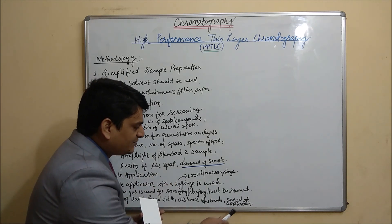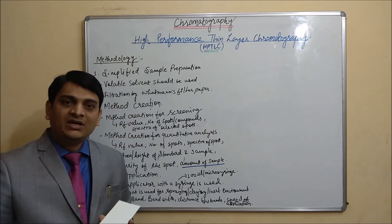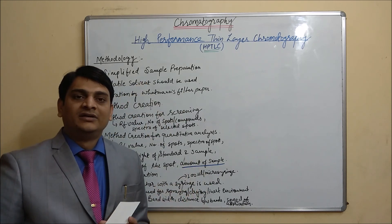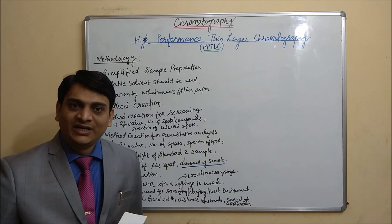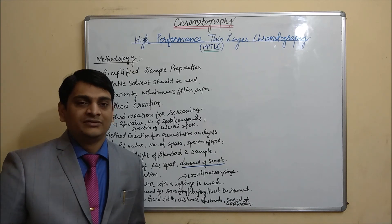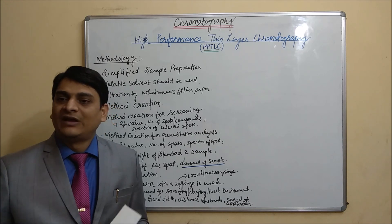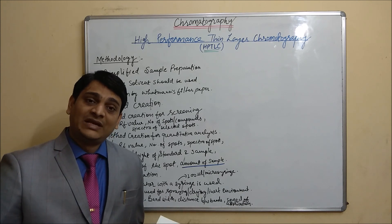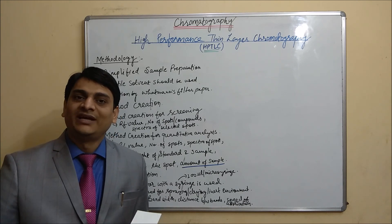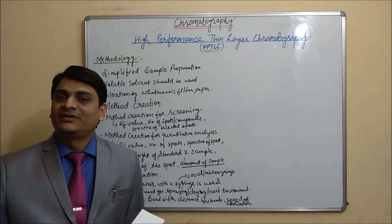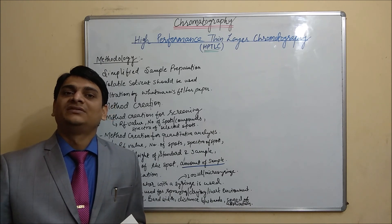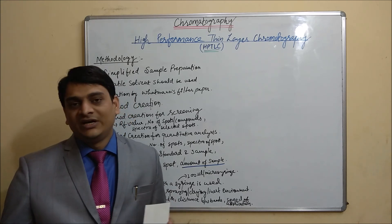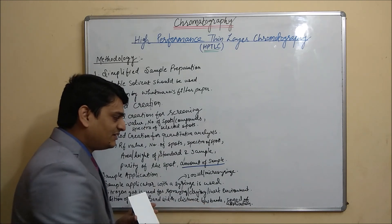Speed of application is totally dependent on our sample and the solvent used for sample preparation. If the solvent is volatile, we can use fast speed — for example, 1 microlitre applied over 5 or 7 seconds. If the sample is slightly less volatile, we use 1 microlitre per 10 seconds. If very less volatile, we use 1 microlitre per 15 seconds.